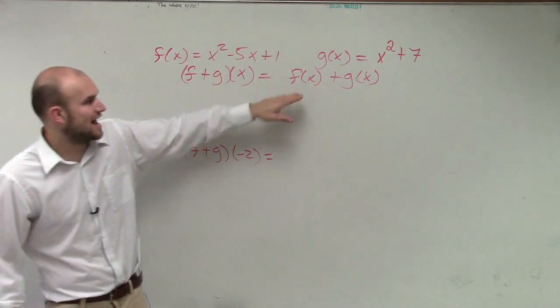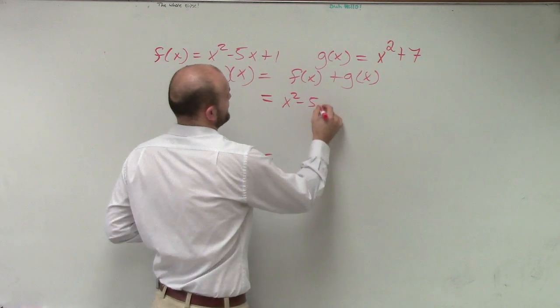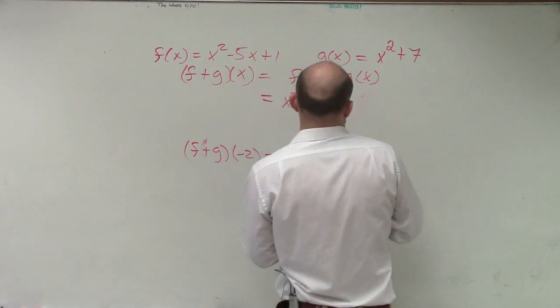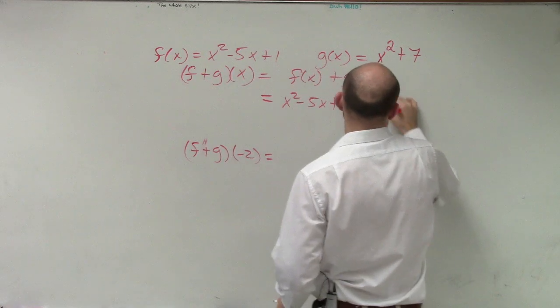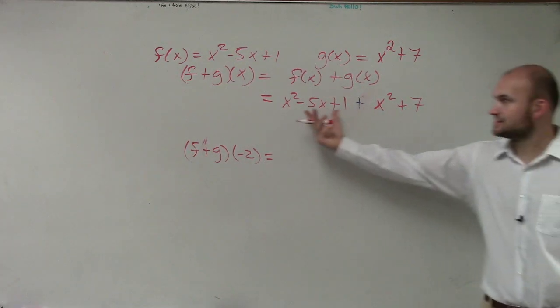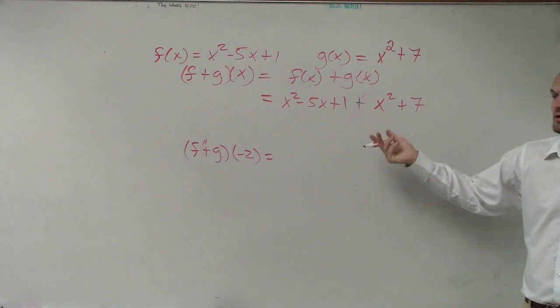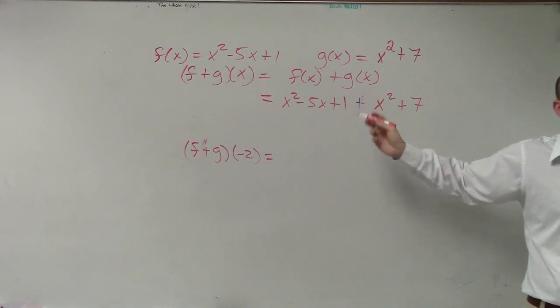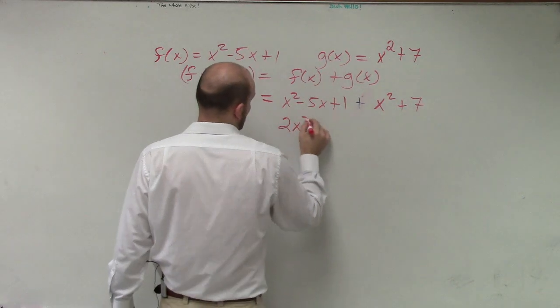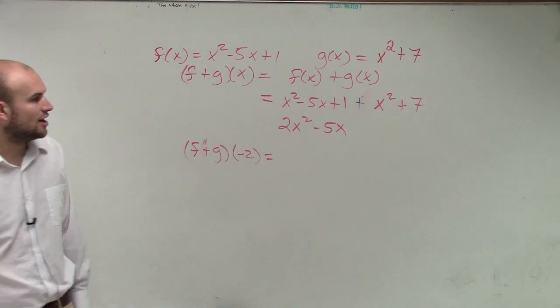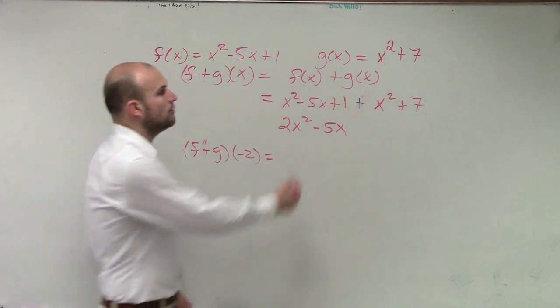So if you add them evaluated for x, f(x) = x² - 5x + 1, plus g(x) = x² + 7. Now we can combine like terms. x² plus x² is 2x². Negative 5x, you can't combine that with anything. And then 1 + 7 is 8.